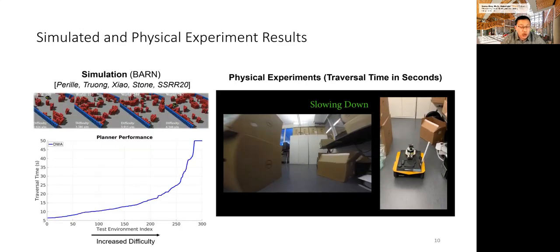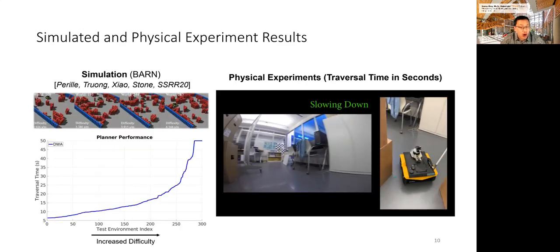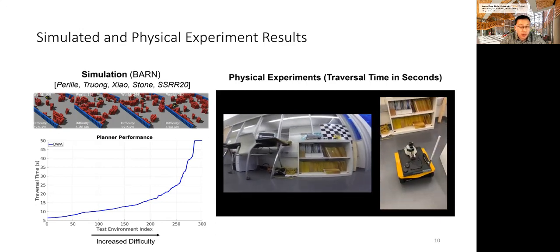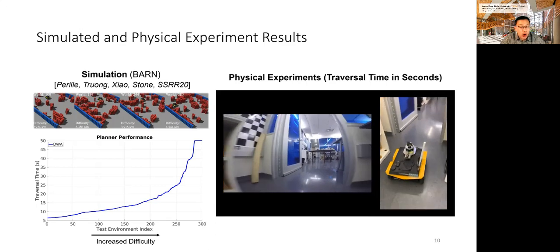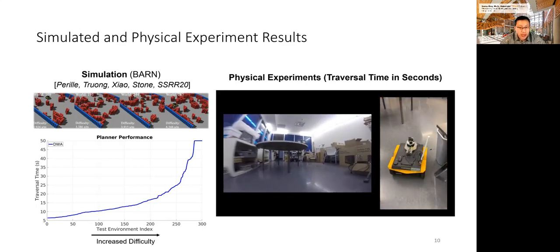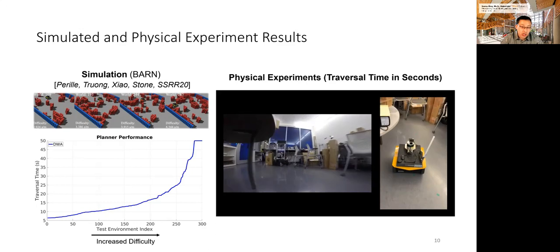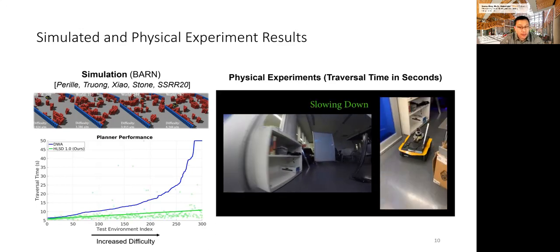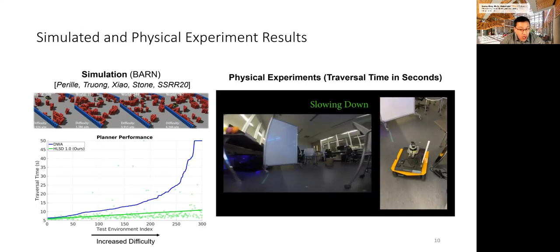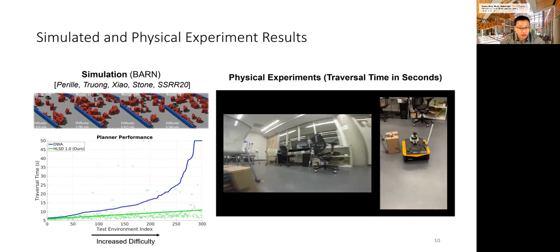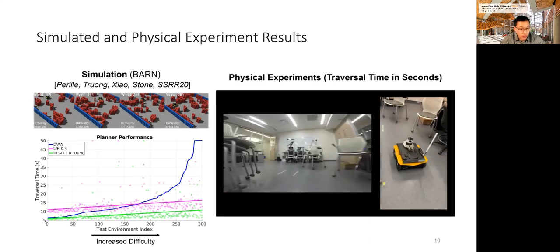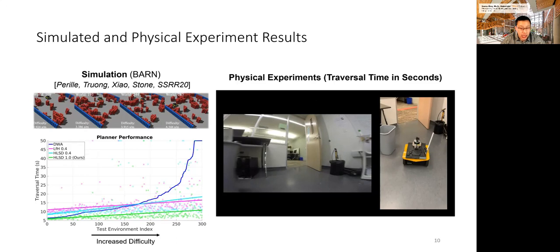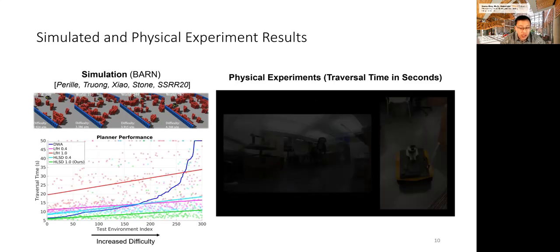We tested HLSD in our benchmark Autonomous Robot Navigation or BARN dataset with 300 randomly generated navigation environments by cellular automata. We ordered the 300 environments based on DWA traversal time, the easier environments on the left and the more difficult ones on the right. HLSD 1.0 achieves the best traversal time and the performance is not very sensitive to the environment difficulty as shown by the flat green line. LFH 0.4 shown in magenta and HLSD 0.4 shown in cyan perform similarly, while LFH 1.0 gets confused due to ambiguity, so the red dots are scattered all over the graph.